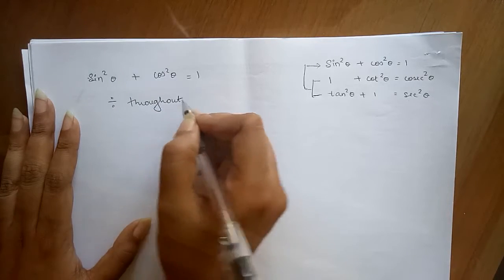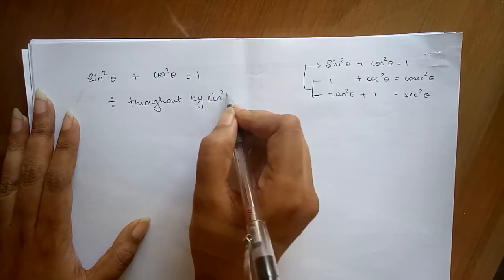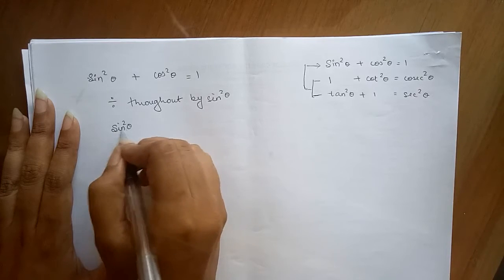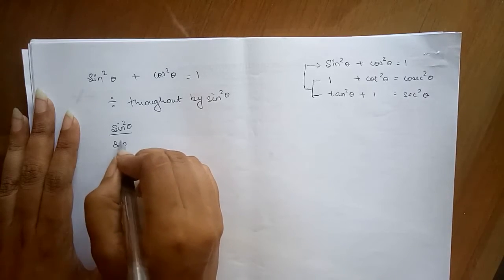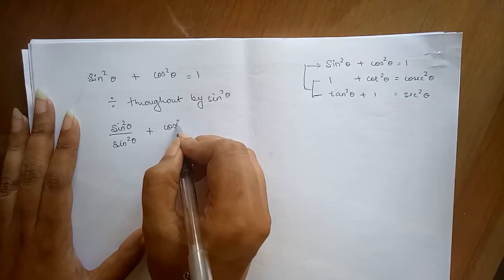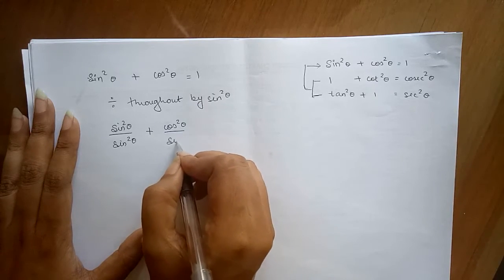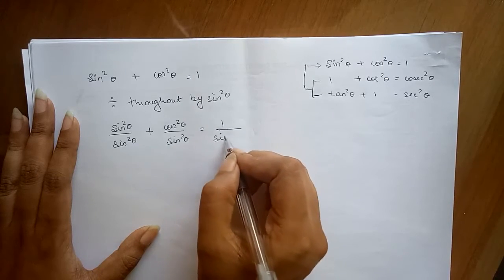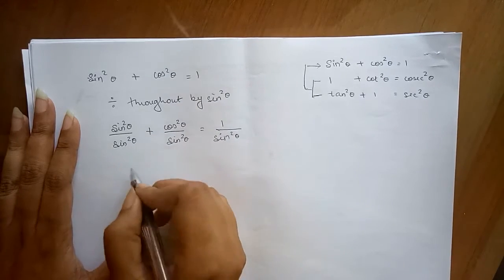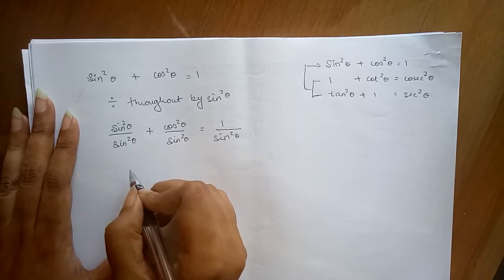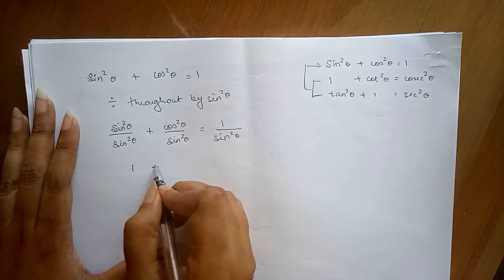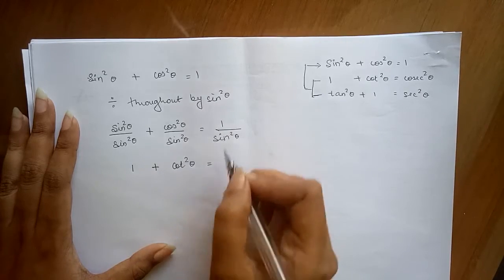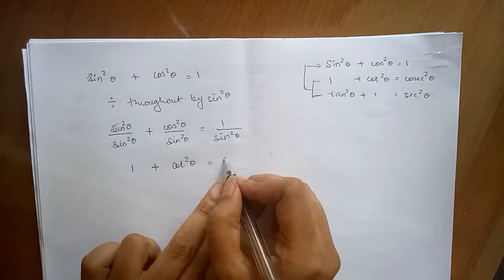We divide throughout by sin²θ. So we get sin²θ/sin²θ + cos²θ/sin²θ = 1/sin²θ. The first term sin²θ/sin²θ gives us 1, cos²θ/sin²θ gives us cot²θ, and 1/sin²θ gives us cosec²θ. This gives us the second identity: 1 + cot²θ = cosec²θ.